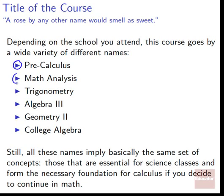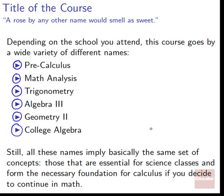Pre-calculus, math analysis, it might be called math analysis with trigonometry, simply trigonometry, it might be called pre-calculus and trigonometry. It could be called Algebra 3, it might be called Geometry 2, it might be called Algebra 3 and Geometry 2. It might be called College Algebra if you're in a college course, it might be called College Algebra with trigonometry, and it might be called something different from all of these. It's got a lot of names, sadly. Still, all these different names imply basically the same set of concepts.